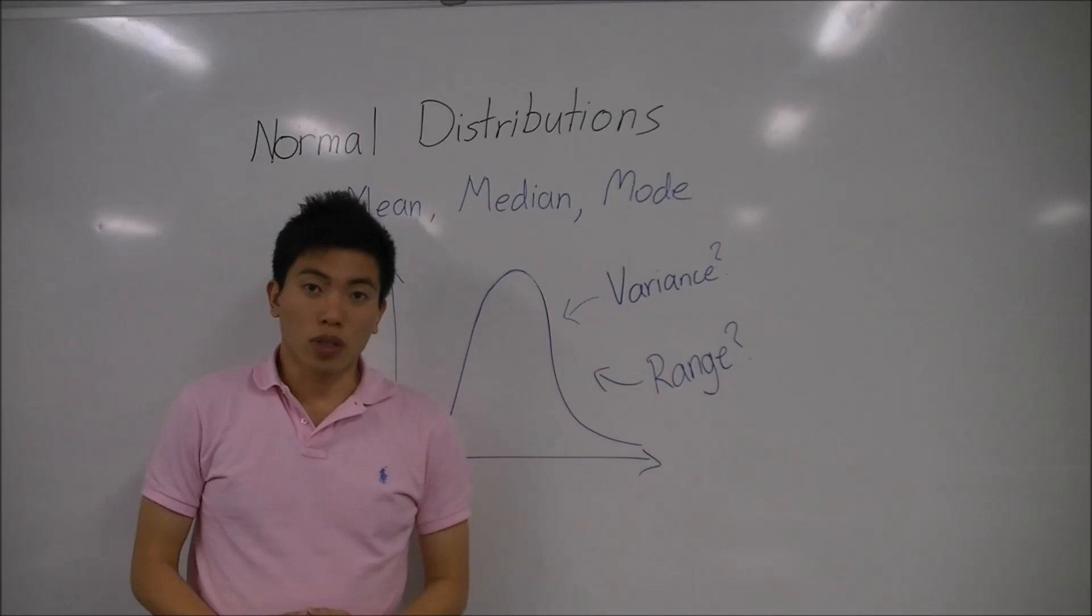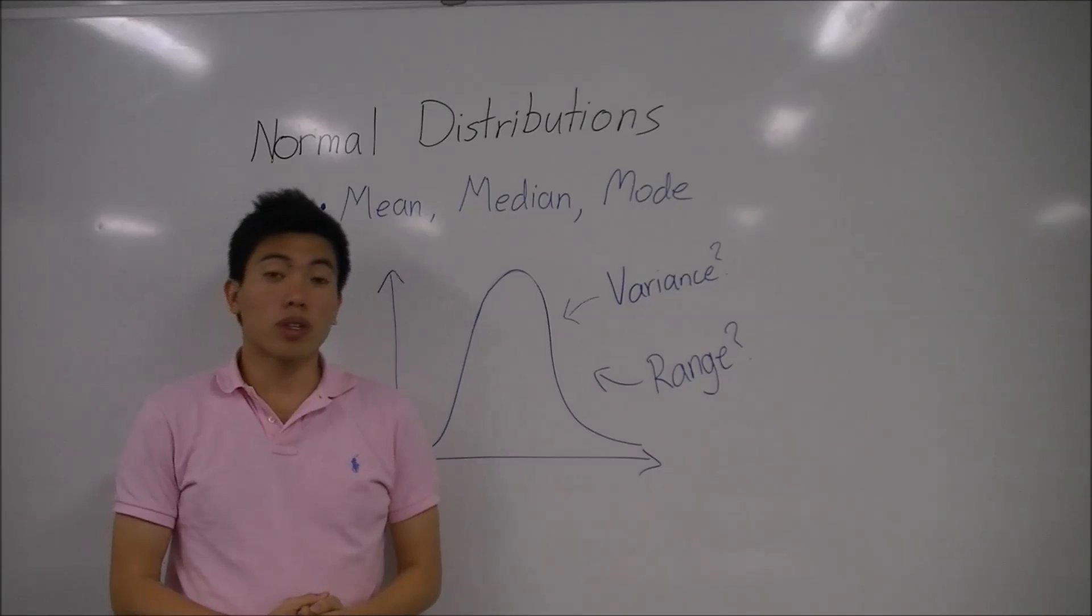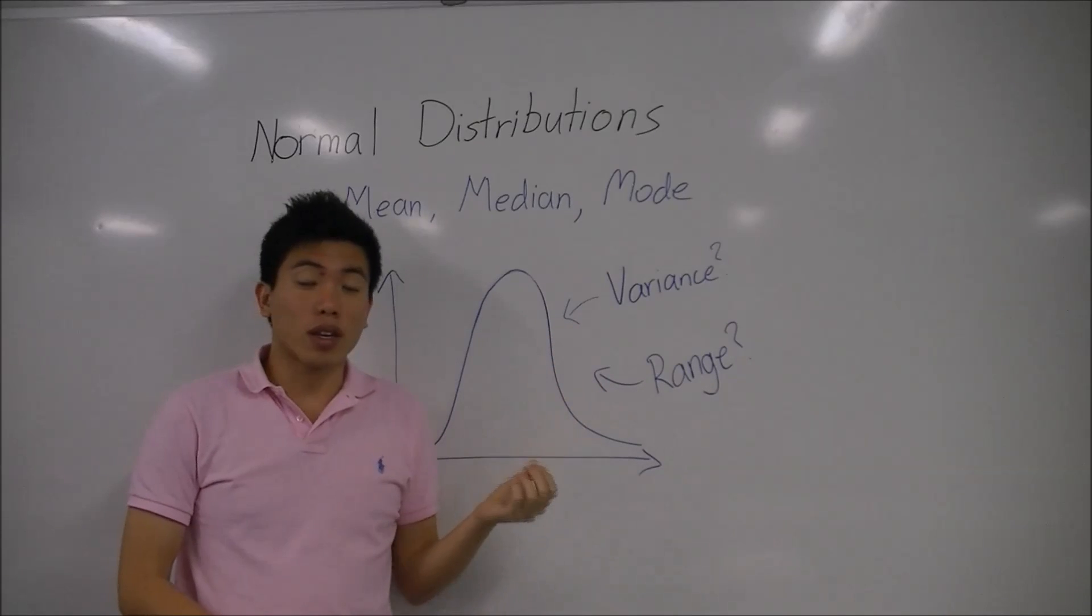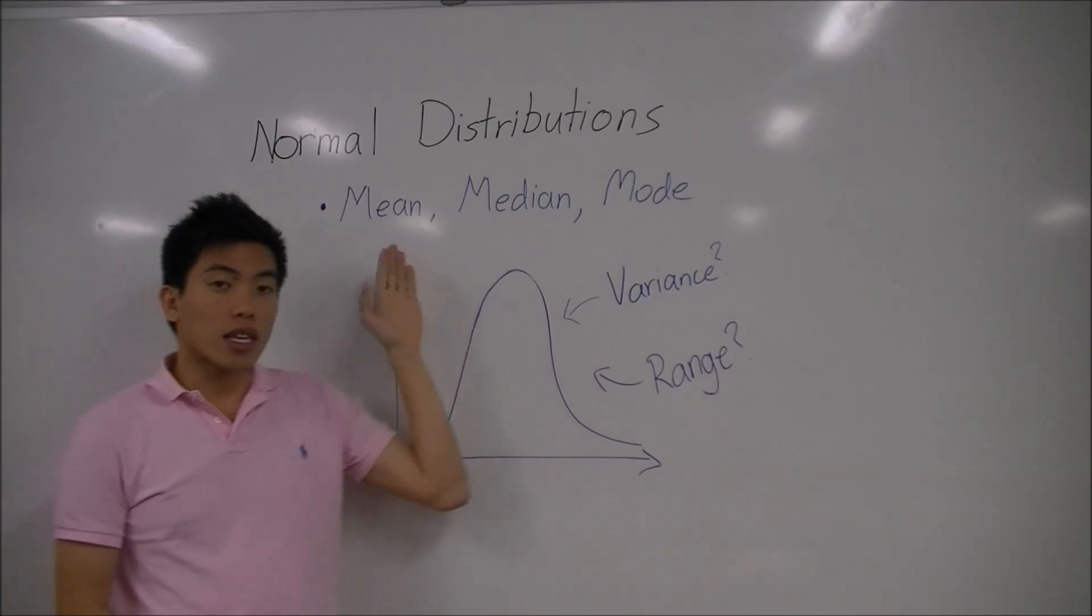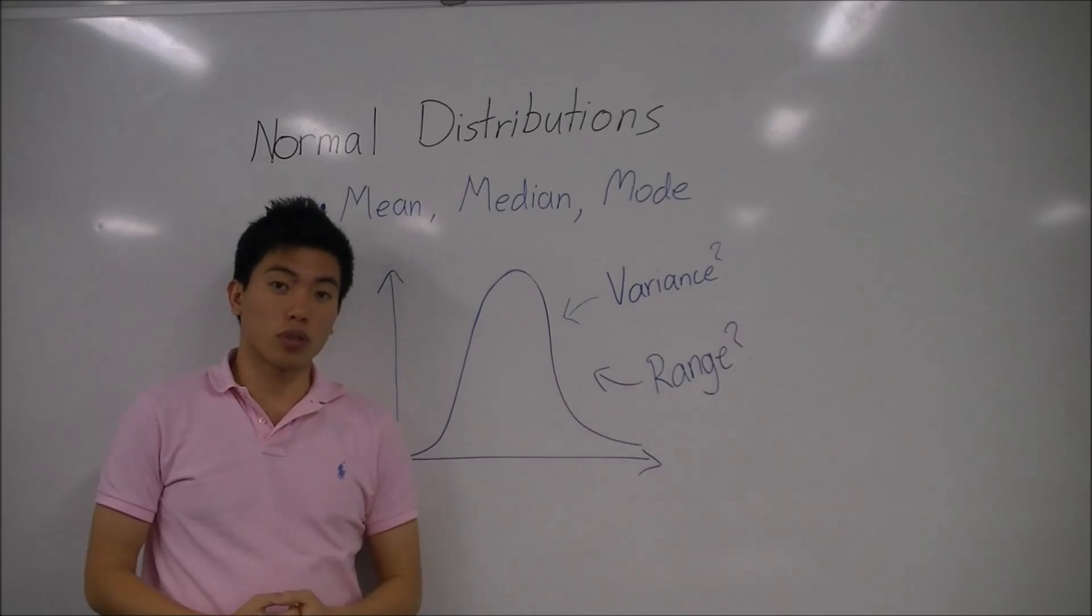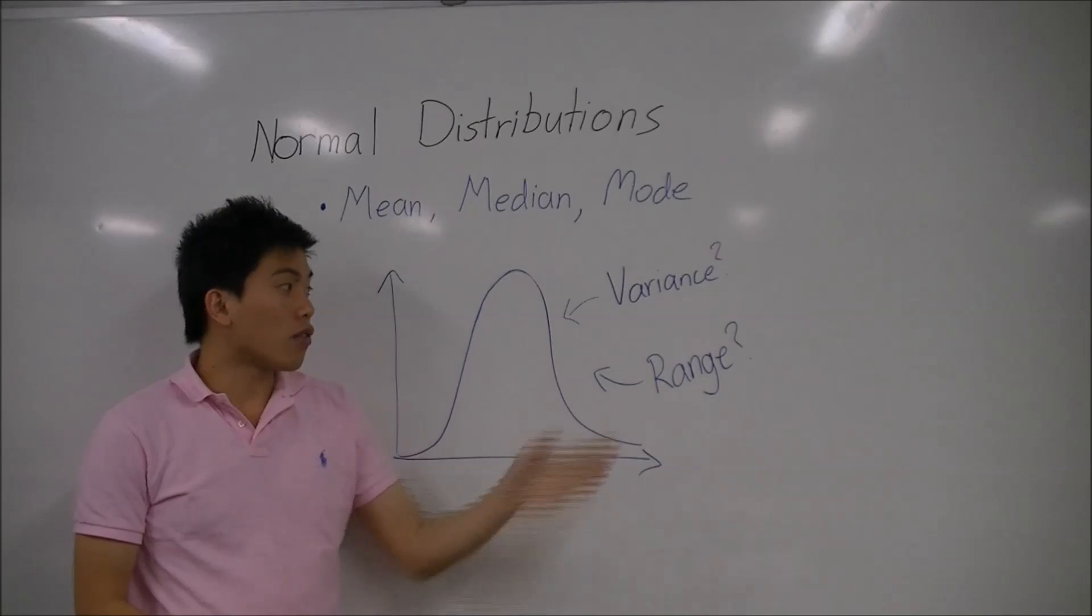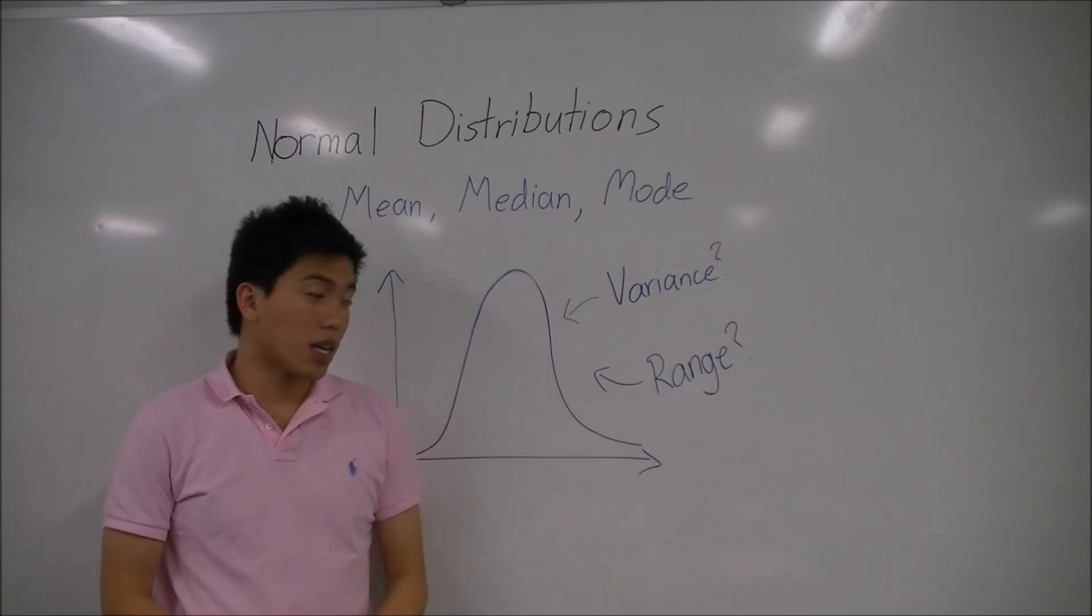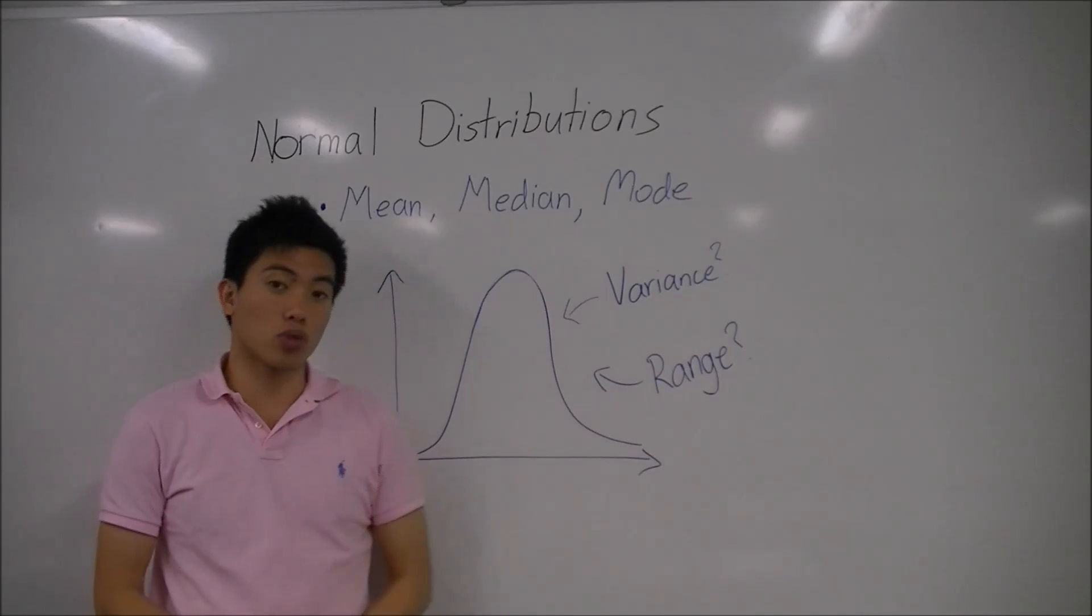Normal distributions. For this section, we want to see if you understand the difference between mean, median, and mode. What do they mean, and where do they come from? Could you calculate them? How do these three properties affect the normal distribution? What about variance and range? Can you describe to us what they do, what they mean, and how they also affect the normal distribution?